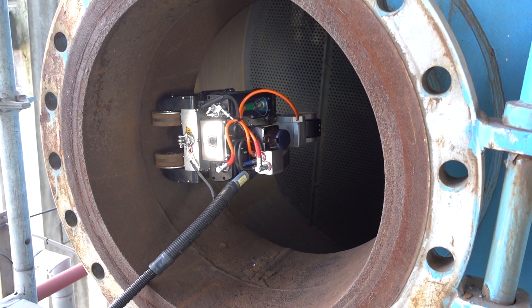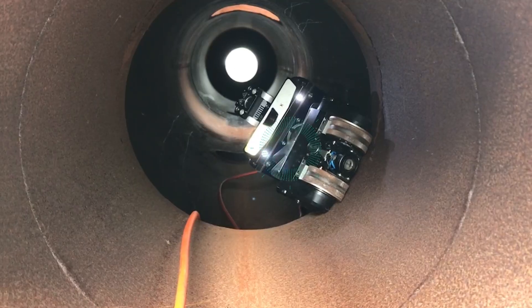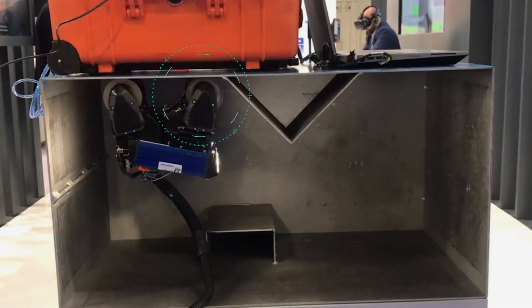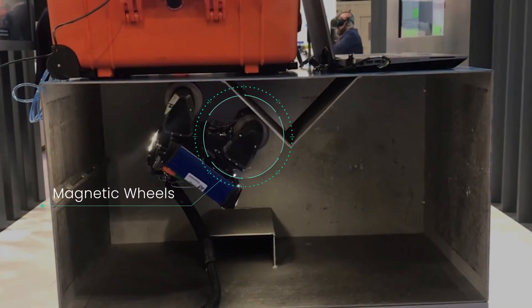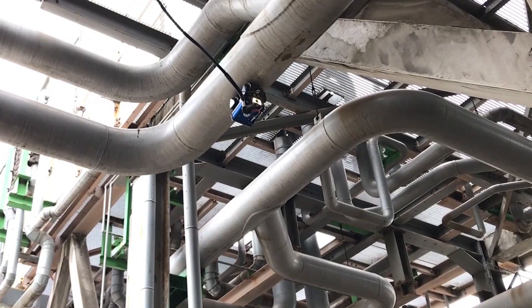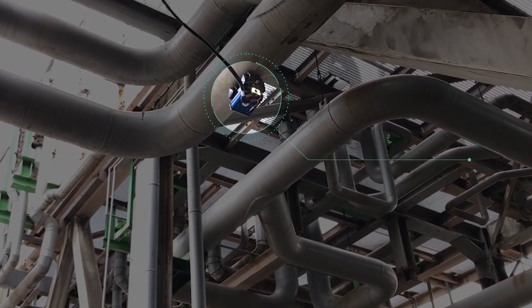For superior NDT inspections, navigate every inch of confined space with the bike. The only magnetically wheeled robot capable of maneuvering in even the most complex environments, there is no need for rope access or scaffolding for those hard to reach spaces.